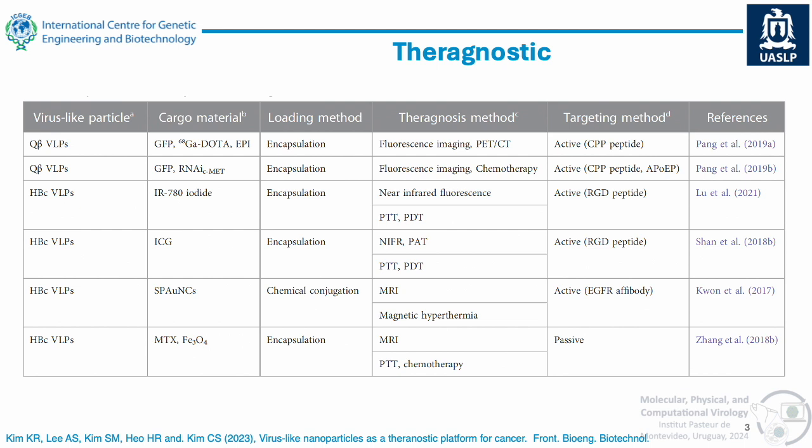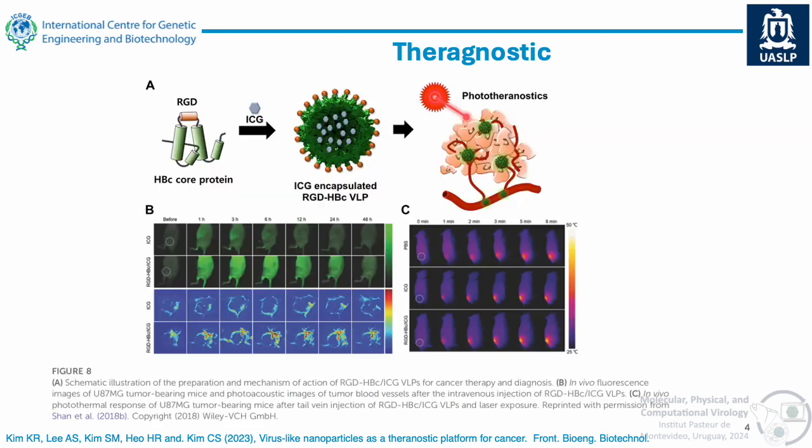Theragnostics means that you can diagnose a disease at the same time you can treat it. In this very nice review from Kim and coworkers, they focus on two particular VLP systems that are very robust. One is Q-beta, which is derived from one of the few bacteriophages that have a single-stranded RNA genome, and the other one is derived from hepatitis B. You can package gallium and GFP so you can have a fluorescent particle detectable by a conventional fluorescent microscope and also by PET scan. You can also add interfering RNAs and use them for chemotherapy, use near-infrared fluorescence to make them active, or use chemical conjugation.